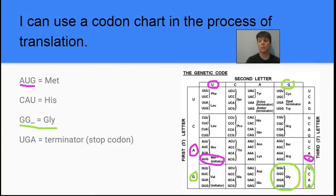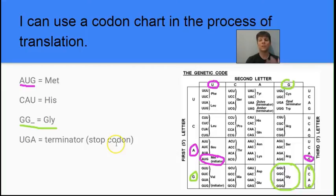That glycine is going to become part of a protein. Finally, there are what we call terminator or stop codons. UGA is an example of a stop codon — when read by the ribosome, it signals to the ribosome that it should stop putting together amino acids, marking the end of the amino acid chain.